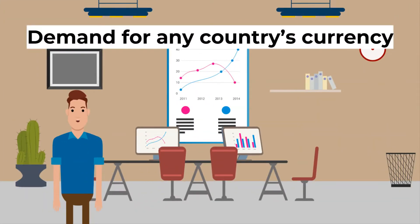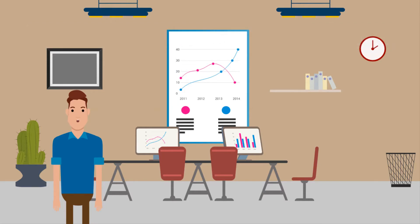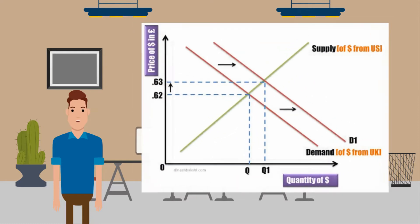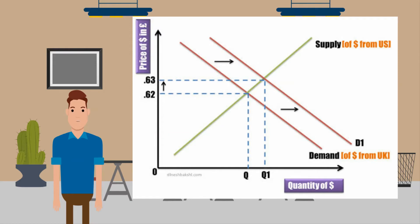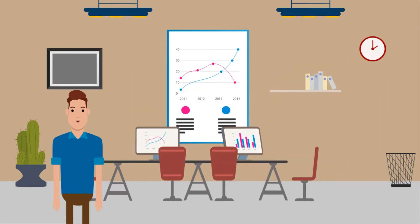Demand for any country's currency on the foreign exchange market is determined by the demand for that country's exports of goods and services and by changes in foreign investment in that country. This is because when foreigners buy another country's exports they must pay in the currency of the exporting country. As we can see in the diagram, as the demand for US dollars from the UK increases, its price in terms of the pound goes up from 62 cents to 63 cents.